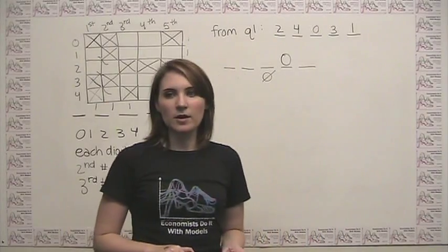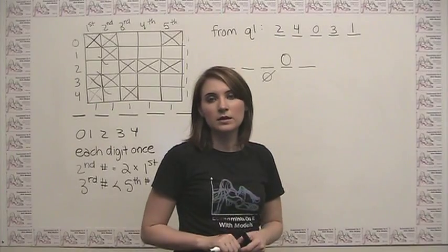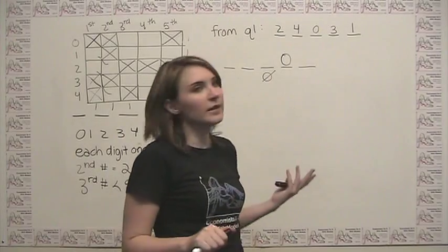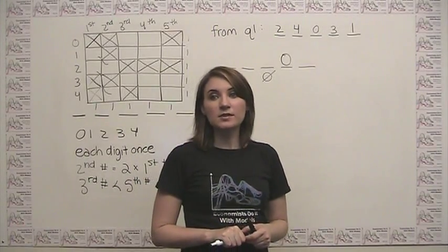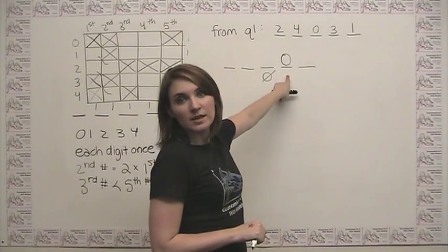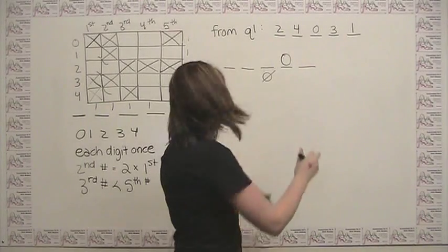So it says which of the following must be true? The second digit of the product code is two. Well, we don't know. Choice B says the third digit of the product code is three. Again, we don't really know. Choice C says the fourth digit of the product code is zero. Oh, that matches up with the one deduction that we were able to make. So we can see that this choice C in fact does have to be true.